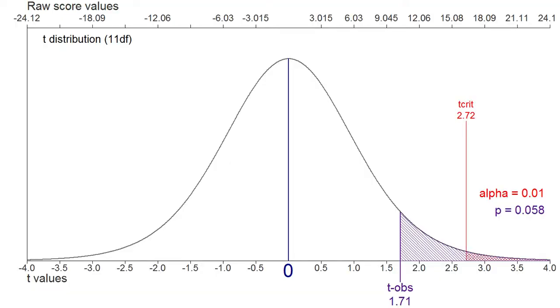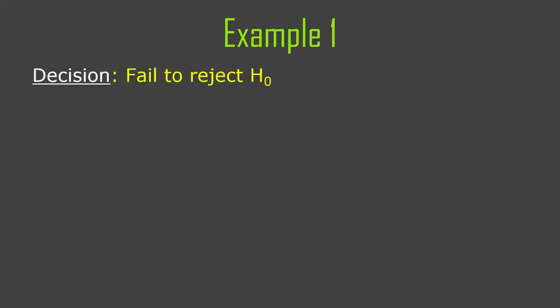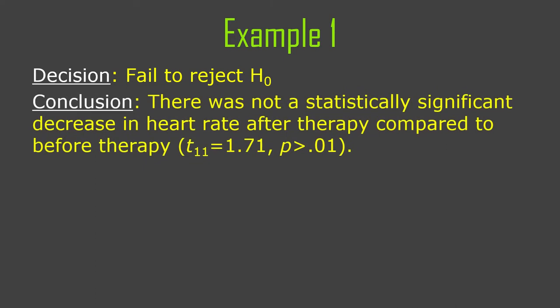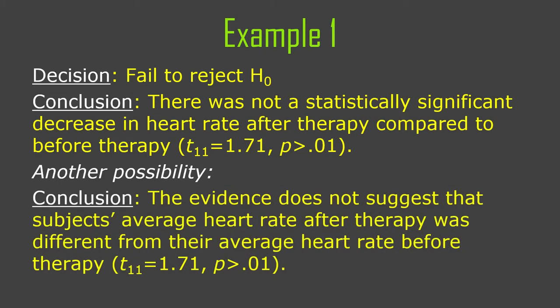Here's our final diagram, and we can definitely see that we did not reject the null hypothesis. t observed 1.71 is not very close to the rejection region. If we had had alpha of 0.05 it would have been closer, but it still wouldn't have quite made it. So our decision has to be a failure to reject the null hypothesis. Our conclusion: there was not a statistically significant decrease in heart rate after therapy compared to before therapy, t(11) = 1.71, p > 0.01.